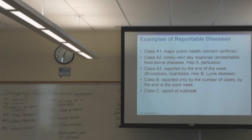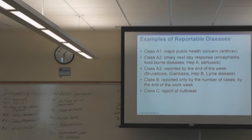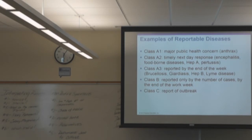Reportable diseases — you need to know these classes, differentiate them, and give examples. There will be a couple of questions on this slide alone. Class 1A is a major health concern — anthrax would be up there. Class A2 requires a timely next-day response: encephalitis, food-borne diseases, Hep A, and pertussis. Class A3 is by end of the week: Hep B and Lyme disease. Class B reports only the number of cases by end of the work week — example is chicken pox. Class C is reporting an outbreak itself, such as a staph skin outbreak in a hospital.